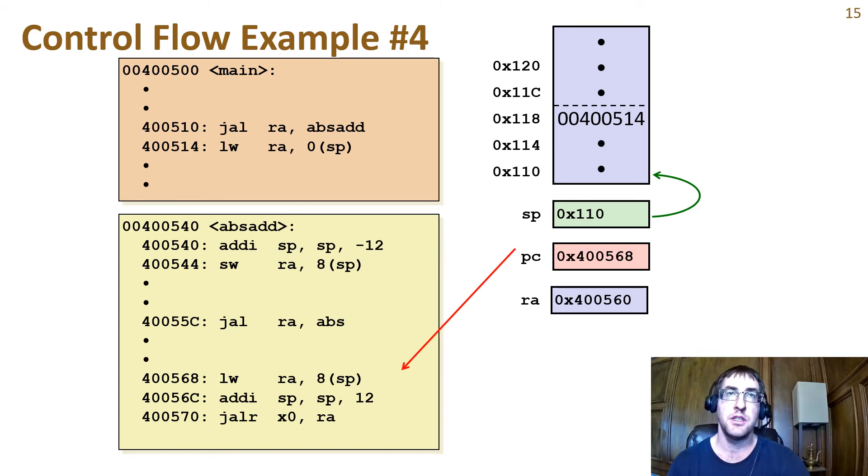After the return from the two sub procedure calls to abs, the return address points into the absadd function. So before we can return from absadd, we have to restore the return address so we wind up back in main. We also need to make sure we return to main with the stack pointer pointing back to the bottom of main's stack frame. So the load word writes to the RA register from the address that we previously stored it to at the start of absadd.